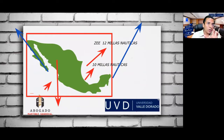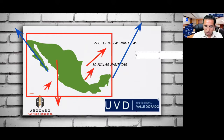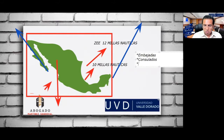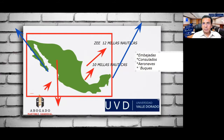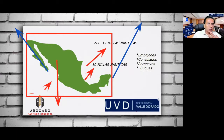La extensión de nuestro territorio también incluye las embajadas, los consulados, las aeronaves con matrícula mexicana y los buques con matrícula mexicana, los cuales son una extensión del territorio nacional. Ese es el territorio.